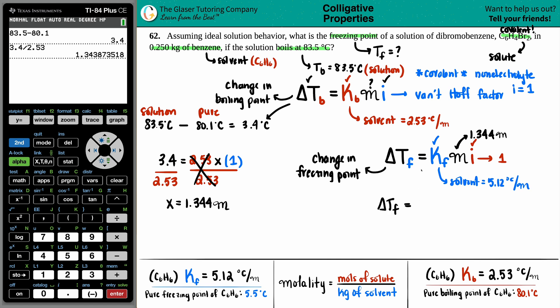So let's figure out my delta TF, the change in the freezing point. Delta TF, the change in the freezing point is going to be 5.12 times that molality we found times 1. I'm going to take this number just to be a little bit more exact times 5.12. And I get a delta TF, the change in the freezing point of 6.88 degrees Celsius.